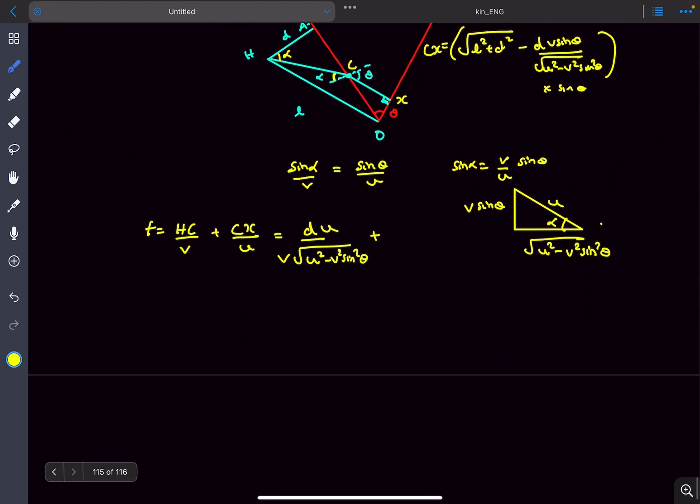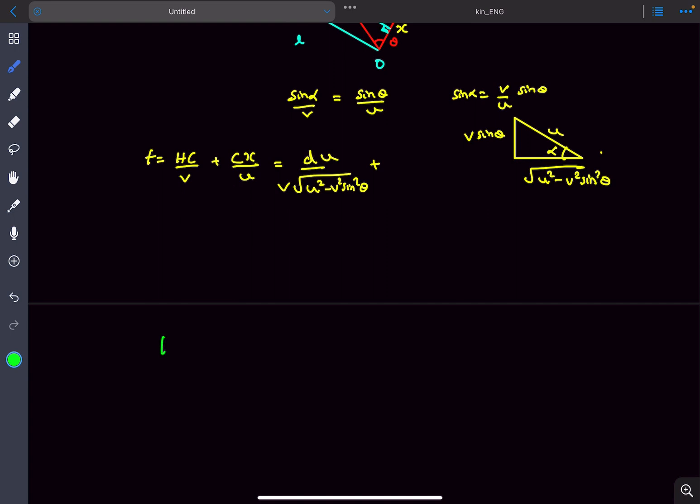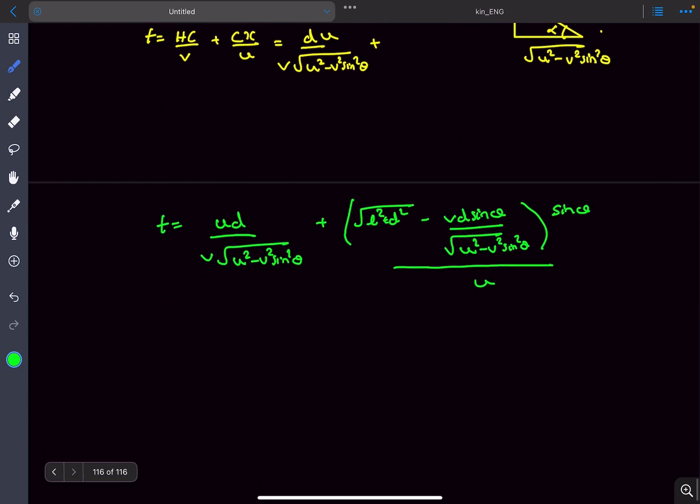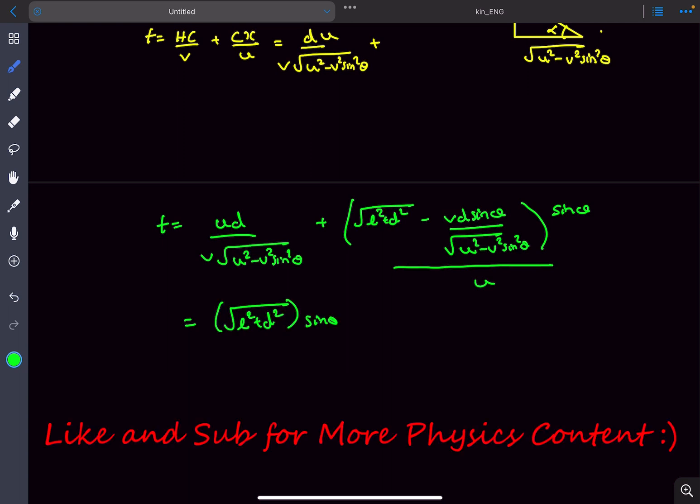If I substitute that, we'll get the value of time to be UD upon V square root of U squared minus V squared sin squared theta. Now if we group the like terms together, we can separate out this term divided by U, and this will be the answer.